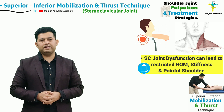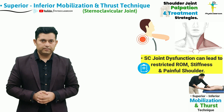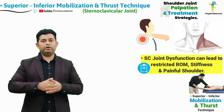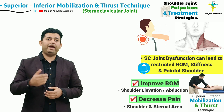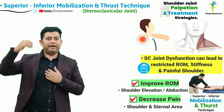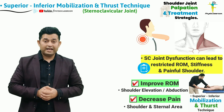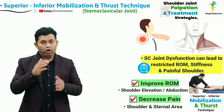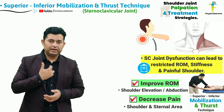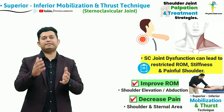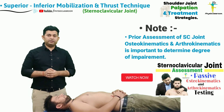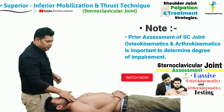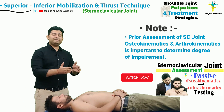Dysfunction of the sternoclavicular joint can often give rise to pain, stiffness, and reduction in the range of motion. The technique demonstrated in this video will help the therapist to gain the range of elevation and abduction in the shoulder joint, as well as reduce the pain that often arises at the site of the junction between the medial end of the clavicle and the sternal bone.